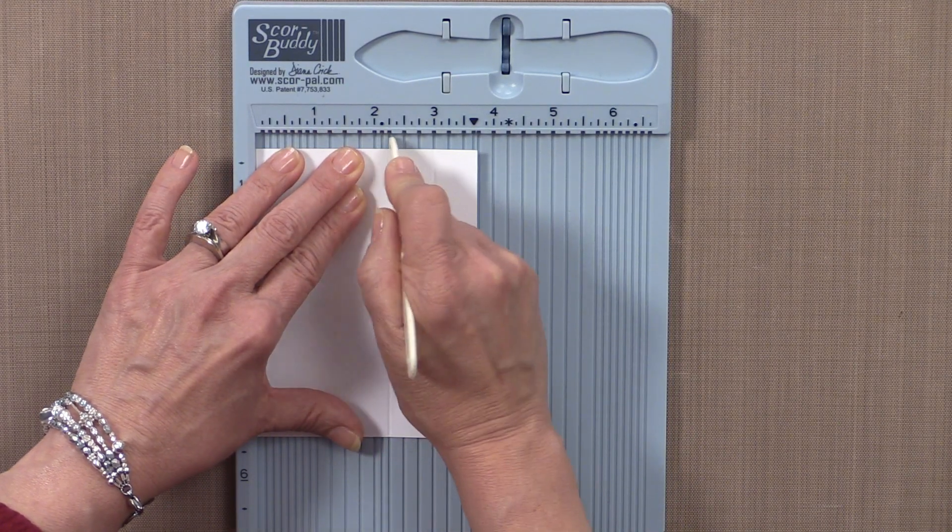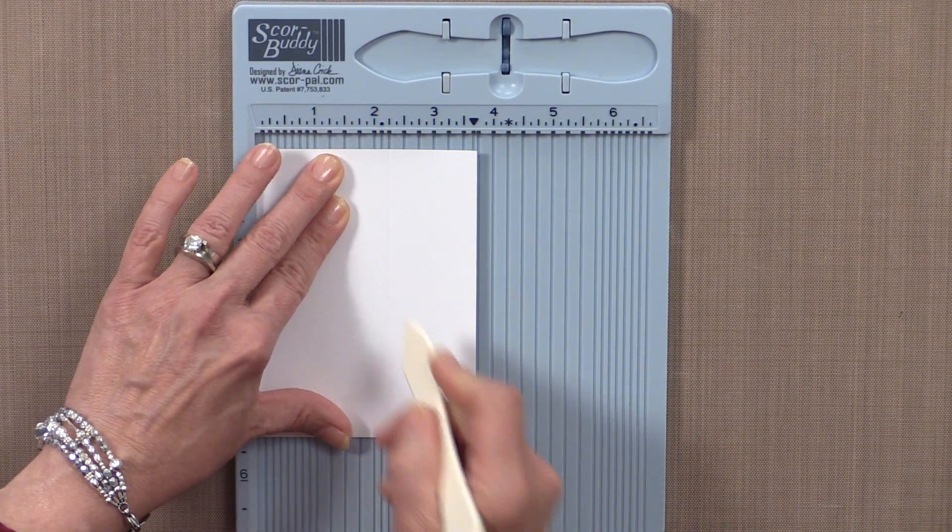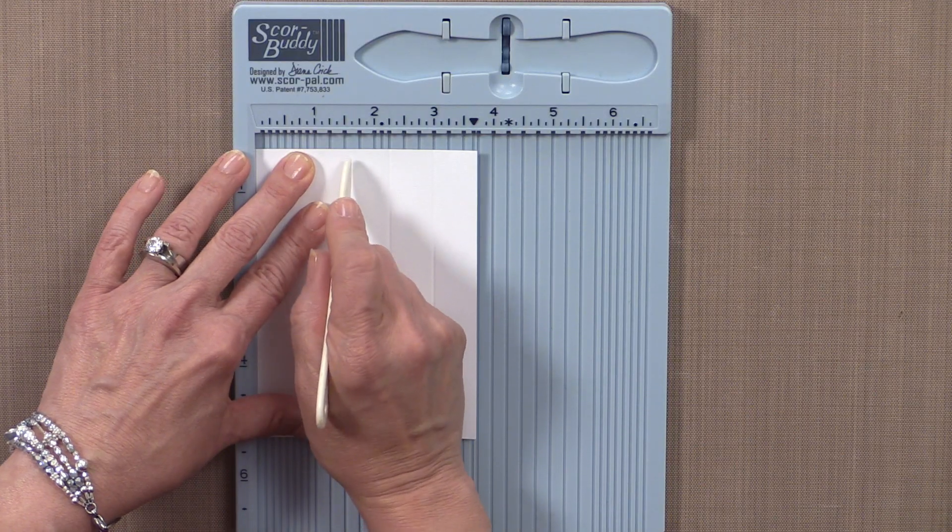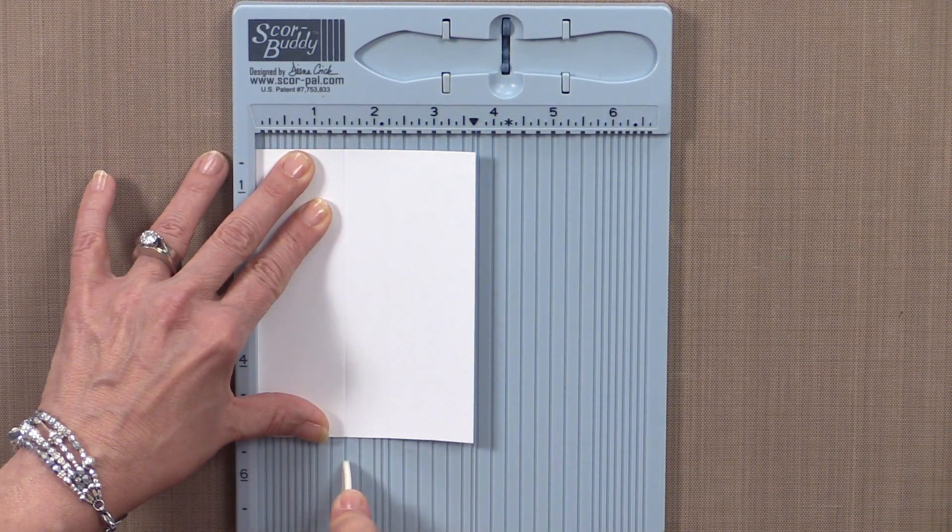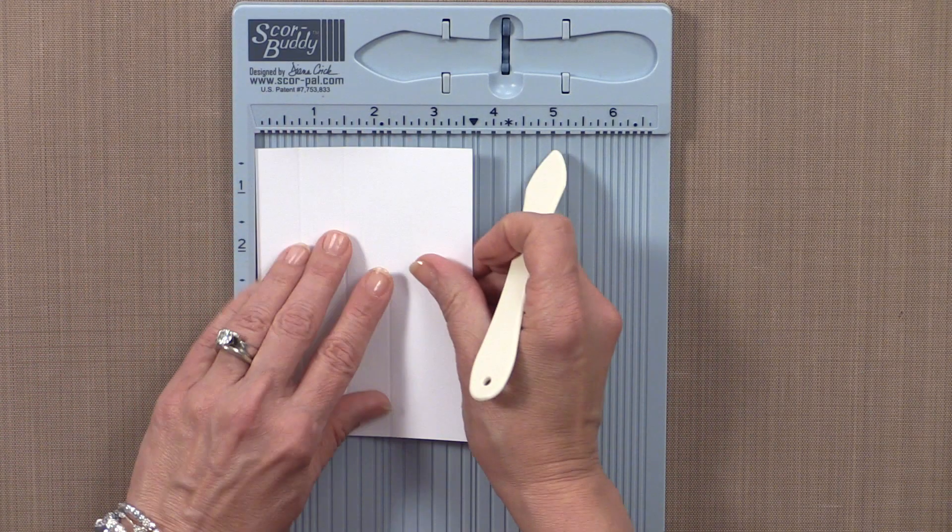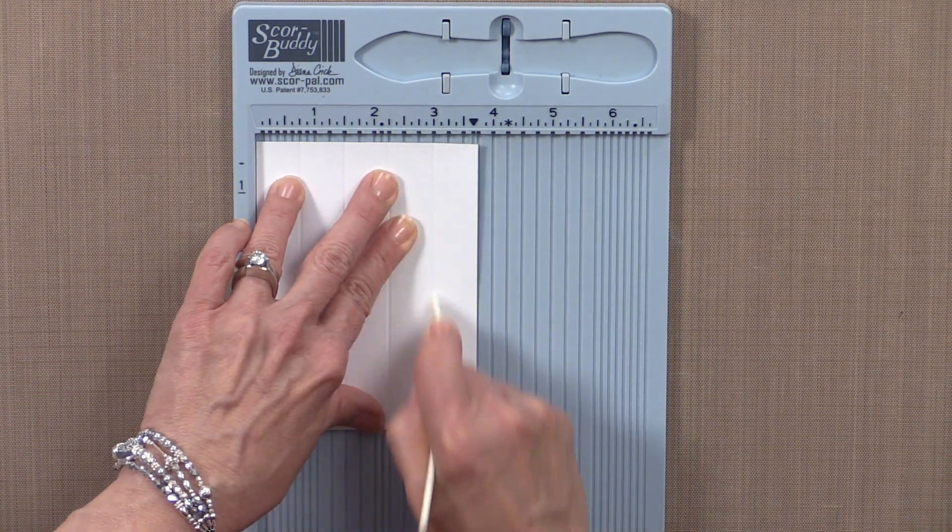The next line is at two and a quarter inches. Then I'm going to go down to one and a half inches. And my final score line, I'm going to turn the cardstock around and score it again at three inches.